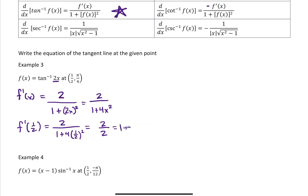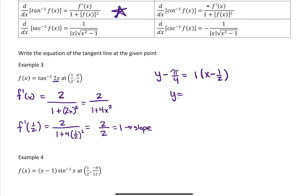So the slope is 1. The equation of the tangent line is y minus the y-coordinate equals the slope times x minus the x-coordinate. If you fully simplify, you get y equals x minus one-half plus pi over four.